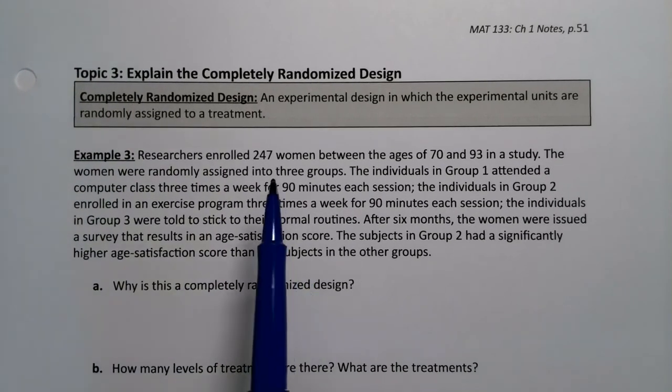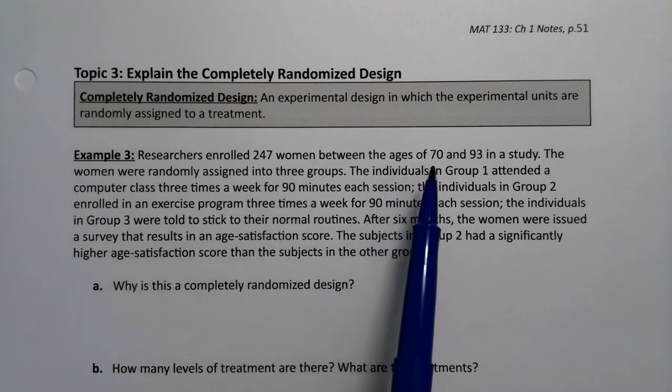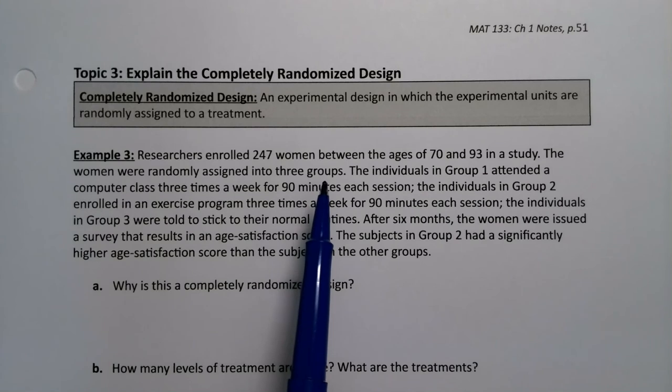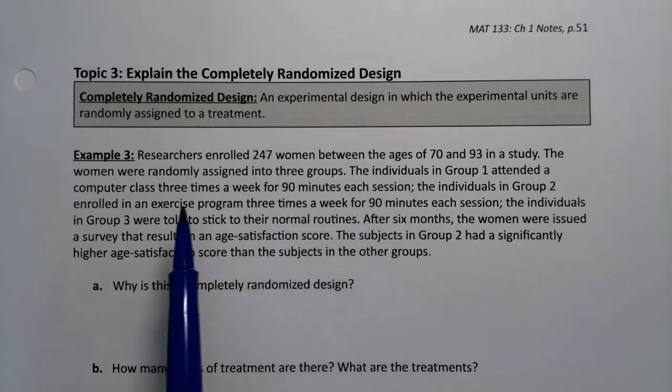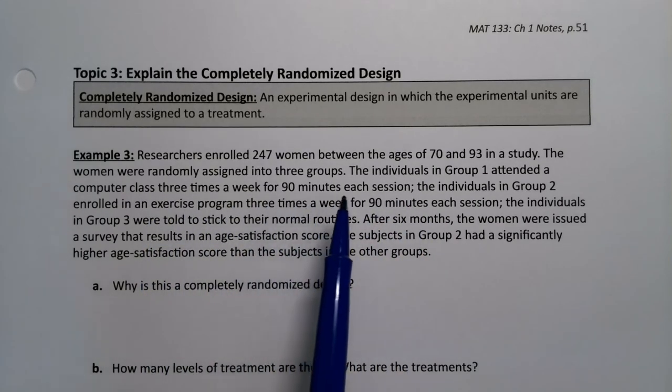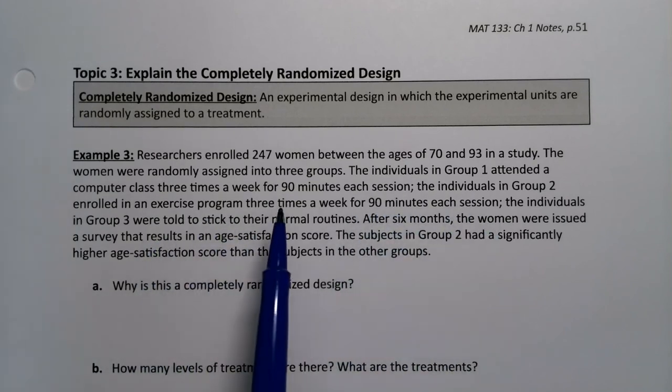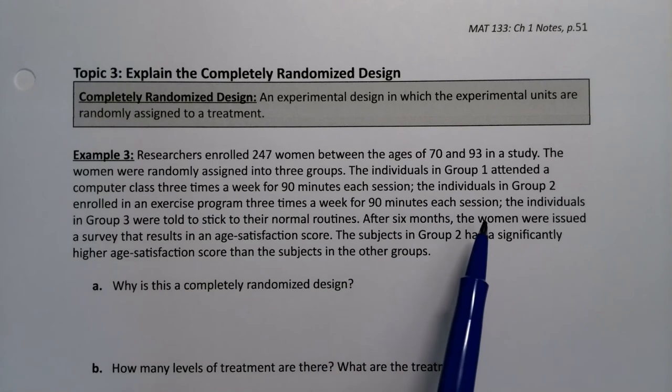So researchers enrolled 247 women between the ages of 70 and 93 in a study. The women were randomly assigned into three groups. The individuals in group one attended a computer class three times a week for 90 minutes each session. The individuals in group two enrolled in an exercise program three times a week for 90 minutes each session.